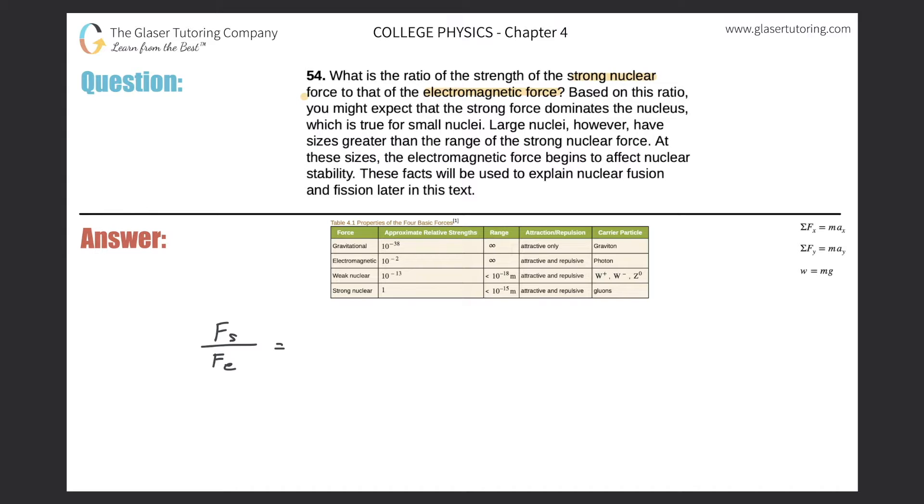Just look up the numbers in this table from your textbook. The strong nuclear force has a value of one in terms of relative strength. The electromagnetic force is 10 to the minus two.